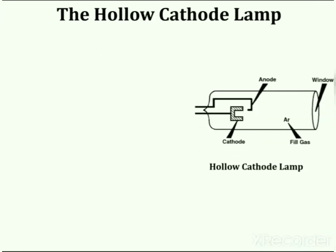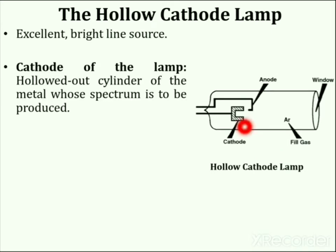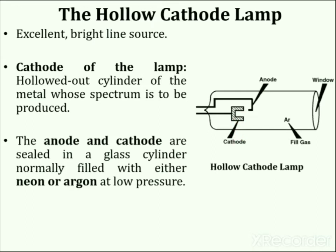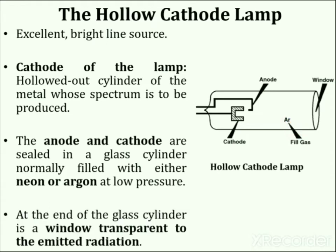The two most common line sources are the hollow cathode lamp and the electrodeless discharge lamp. The hollow cathode lamp is an excellent bright line source for most elements determinable by Atomic Absorption Spectroscopy. The cathode is frequently a hollowed-out cylinder of the metal whose spectrum is to be produced. The anode and cathode are enclosed in a glass cylinder filled with neon or argon at low pressure, with a window transparent to the emitted radiation at the end.